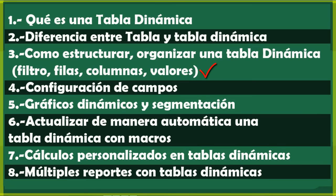We are going to apply Dynamic Tables to an example in Excel that I have here. We are going to learn to order the filters, the rows, the columns, and the values — this is the most important part so that you understand how a Dynamic Table works and how it is structured. As a fourth point, we have the configuration of fields — to configure the field of dates, and whether you want a sum, an average, count, maximums, minimums, and all that.